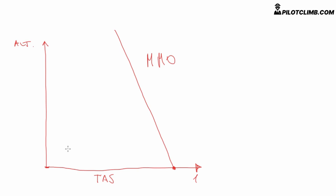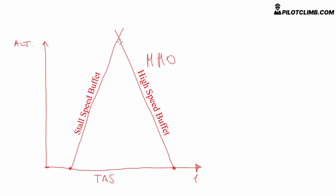Now the stall speed: at mean sea level it is a very low value because of high density. However, with a climb, since density decreases, your stall speed will actually increase because you need to fly faster to keep flying. There will be a point where the low speed limit and the high speed limit get to the same point — this area creates a corner. When the high speed limit and low speed limit get very close, it's called the coffin corner. This is the stall speed problem and this is the maximum Mach number problem.